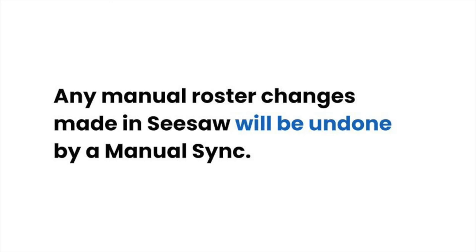Any manual changes made in Seesaw to classes that sync with your SIS — such as adding students to a Seesaw class when they aren't rostered to that class in your SIS — will be undone by a manual sync. Like a full sync, a manual sync will force the data in Seesaw at a school-by-school level to exactly match what is being shared from your SIS. If you need to keep manual changes in Seesaw, please reach out to Seesaw support for assistance before running a manual sync.